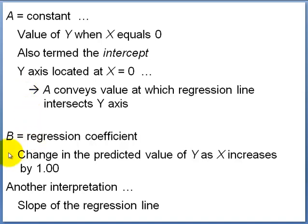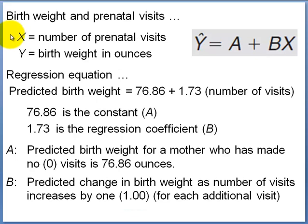b is the regression coefficient and it conveys the change in the predicted value of y as x increases by one. Another interpretation of b is the slope of the regression line — the change in the predicted value of y as x goes up by one is the same thing as slope. So b conveys both slope and the predicted change in y as x goes up by one.